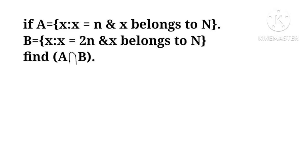If A equals x, x equals n and x belongs to N, and B equals x, x equals 2n and x belongs to N, find A intersection B.